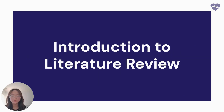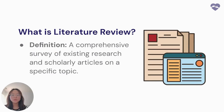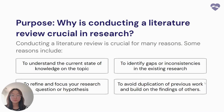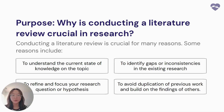So, what exactly is a literature review? A literature review, commonly shortened to lit review, is essentially a comprehensive survey of all existing research and scholarly articles on a specific topic. It is one of the most important steps in conducting research. Why is it so important? It helps us gain a better understanding of the current state of knowledge on the topic, helps us find gaps and inconsistencies that we can base our research on, and helps us avoid duplication of previous findings so that we can build upon the findings of others. Another reason is because it helps you refine and focus your research question or hypothesis further.